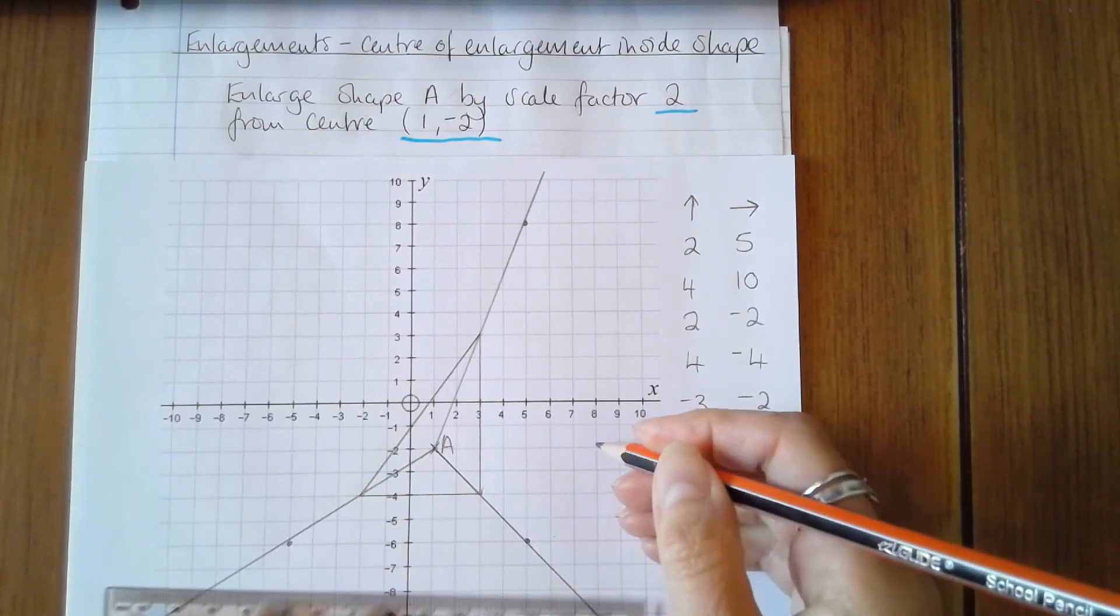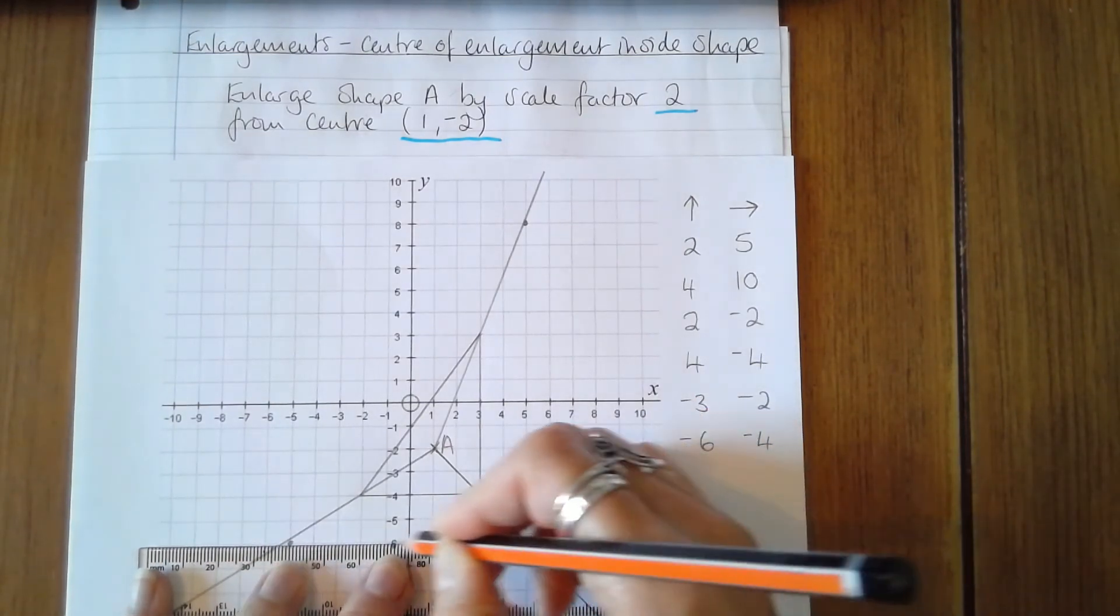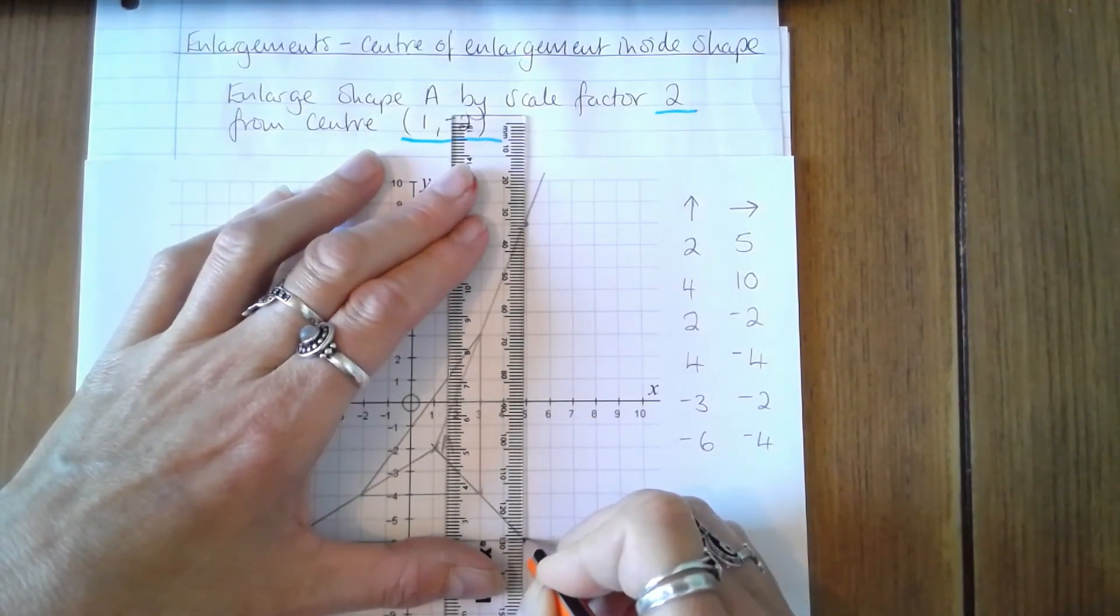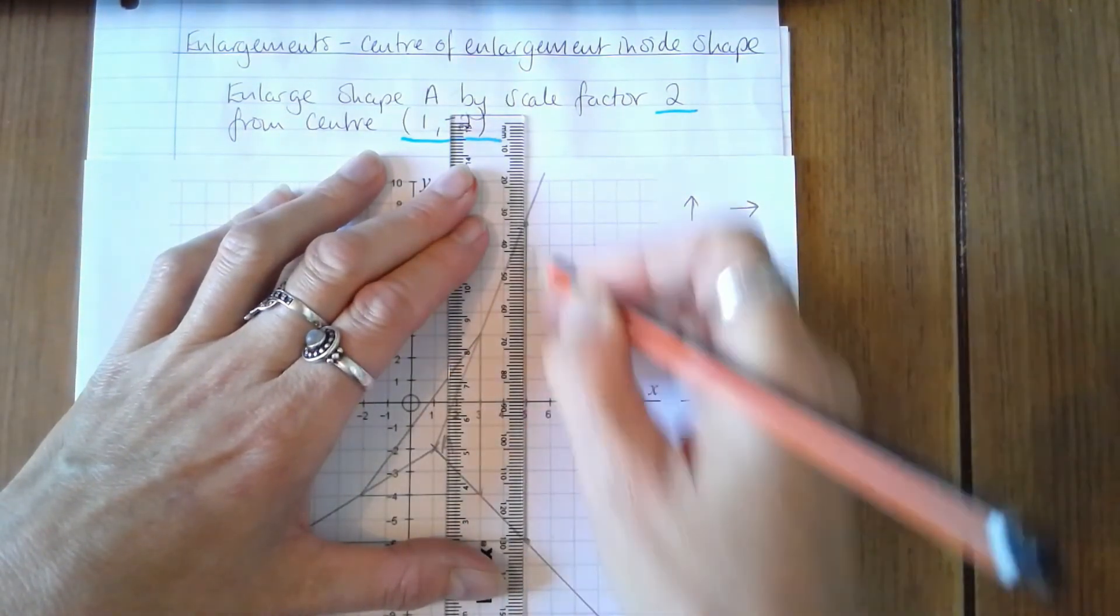And just join up the vertices of the shape. And you should be able to see by eye that it's an enlargement of the original shape, because we're very good at recognising perfect enlargements as human beings.